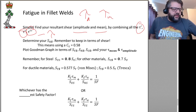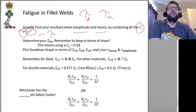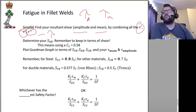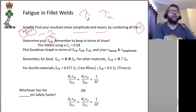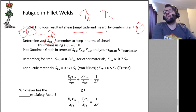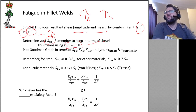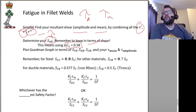We can treat it the same as if we had a pure torsional load on a shaft. We need to figure out our SNS — our shear fatigue strength. Keeping everything in terms of shear, when doing the SNS calculation, use a CL of 0.58.